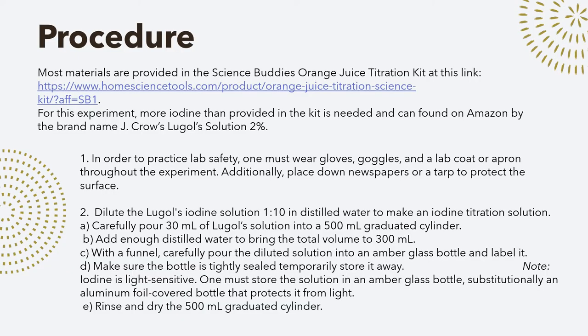Before getting into the procedure, I would like to preface by saying that I purchased the Science Buddies orange juice titration kit. It came with most of the materials, but I did have to purchase more iodine because I did a lot of trials for the sake of consistency and accuracy. Before dealing with the iodine solution, I made sure that I was wearing gloves, goggles, and a lab coat, and placed down newspaper for lab safety.